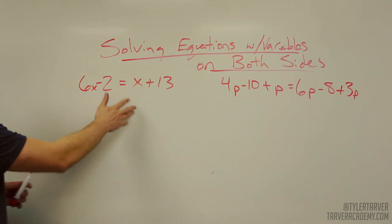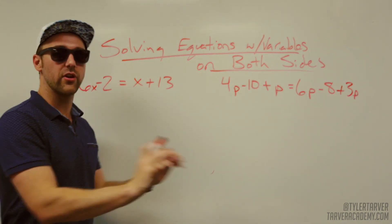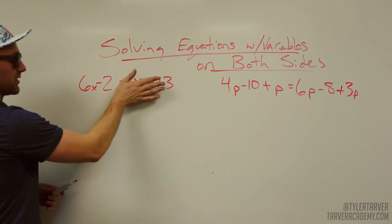Your ultimate goal is to get all of your variables to one side and then all your regular numbers to the other side. Alright, so the first thing we do is simplify before going across the equal sign.